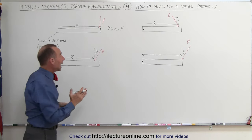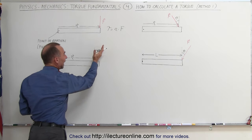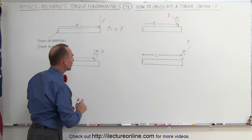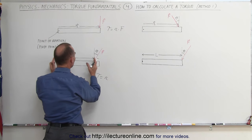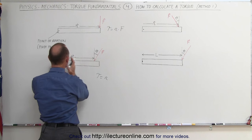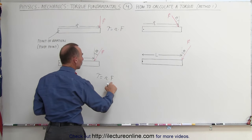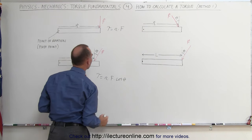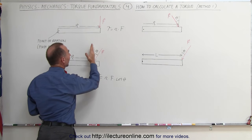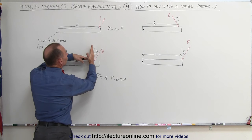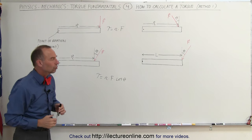Now if the force doesn't act perpendicular to the position vector, if there's an angle between the vertical and the direction of the force — let's call it angle theta — then the torque can be calculated by multiplying the magnitude of the position vector from the point of rotation to where the force is acting, times the magnitude of the force, times the cosine of the angle between them. We use the cosine because we're finding the angle between the force and the vertical, the perpendicular to the position vector, not the angle between the force and the position vector. Then we would have to use the sine of theta.